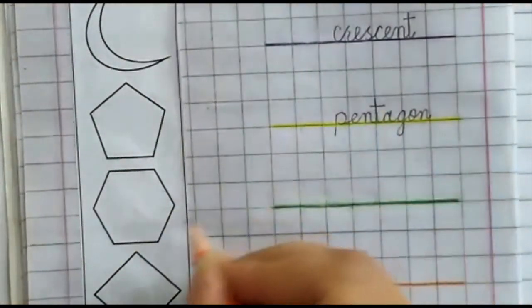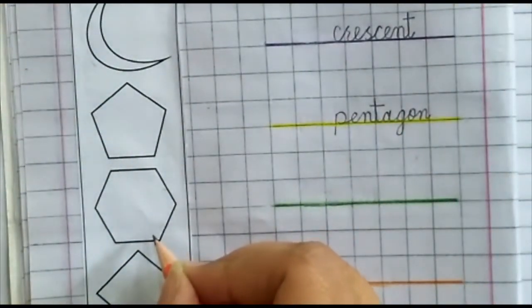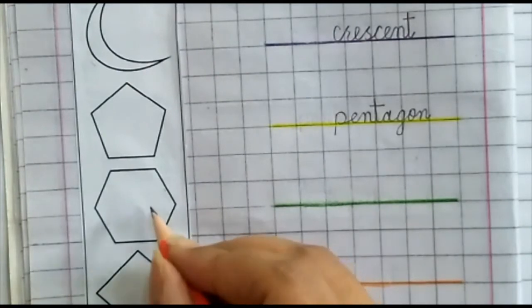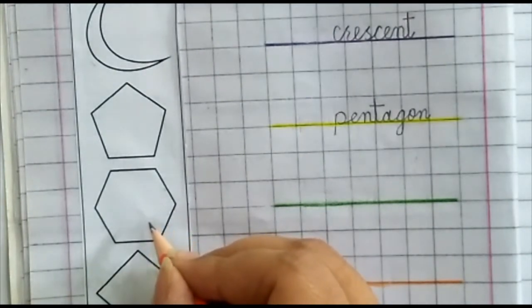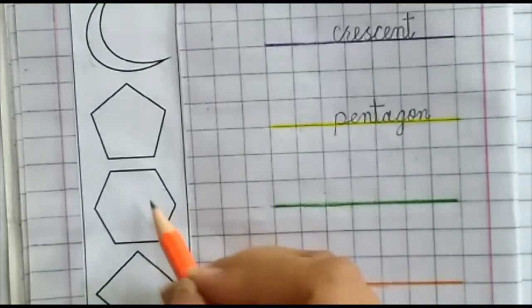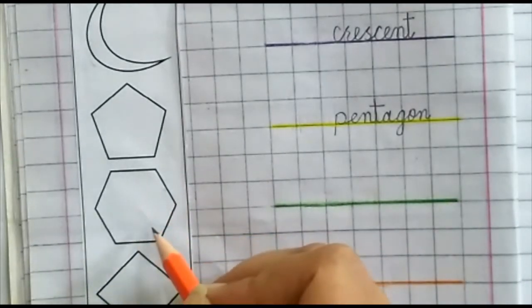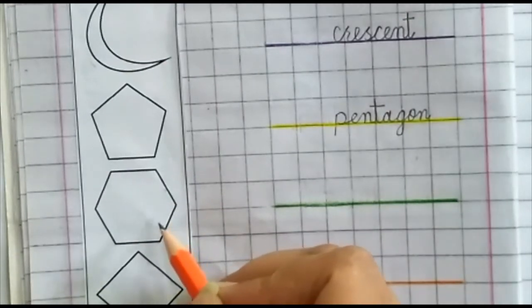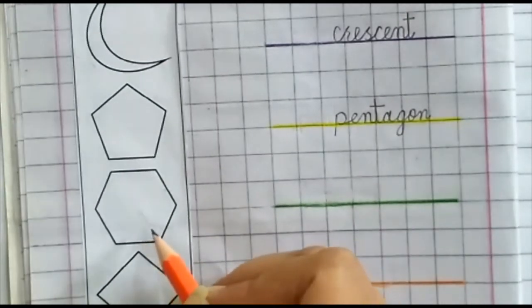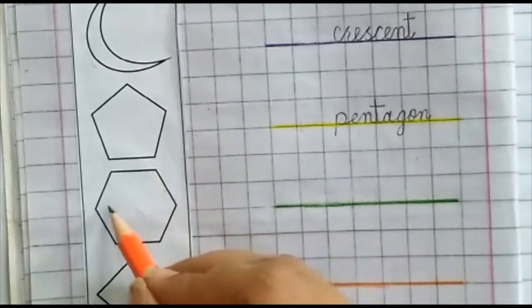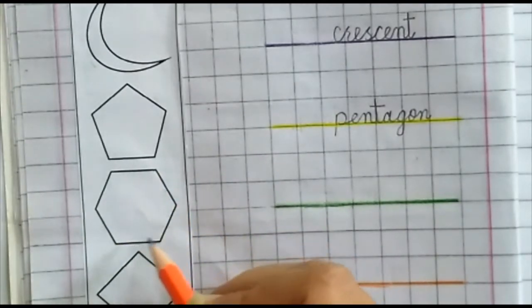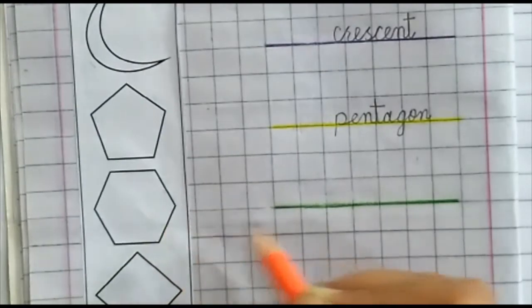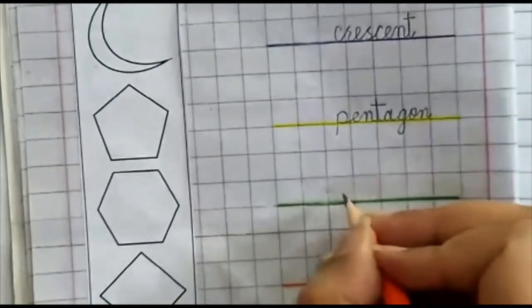Okay, one class. Next shape is hexagon. Hexa means six. A shape that has six corners is called hexagon. Now we write here: hexagon.